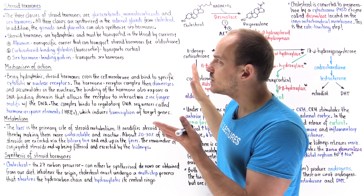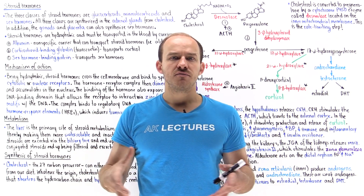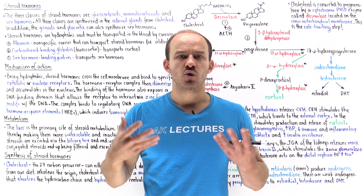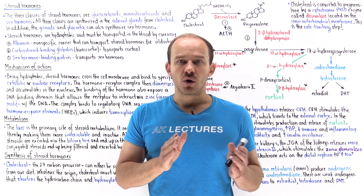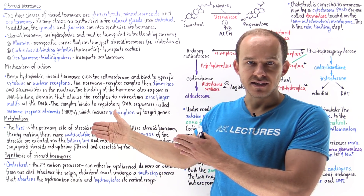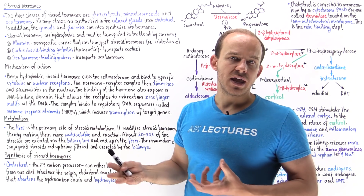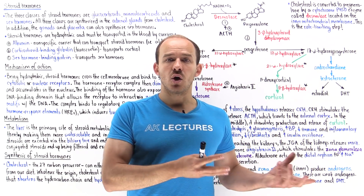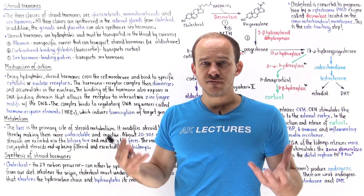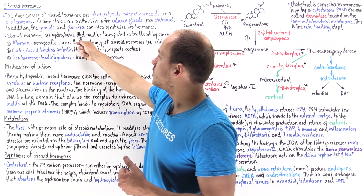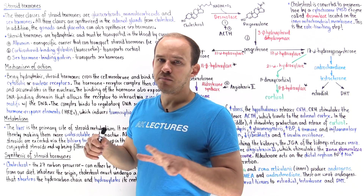All three classes of steroid hormones can be produced in the outer portion of the adrenal gland, the adrenal cortex. We can also synthesize certain sex hormones outside the adrenal glands in peripheral tissues such as the gonads — the testes in males and the ovaries in females. During embryological development in pregnant women, specific types of sex hormones can also be synthesized in the placenta.